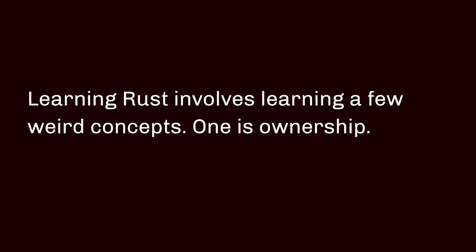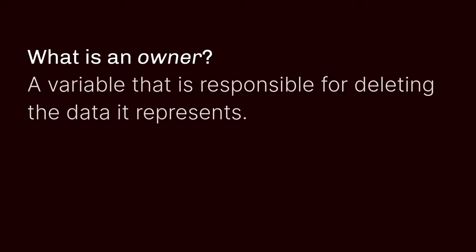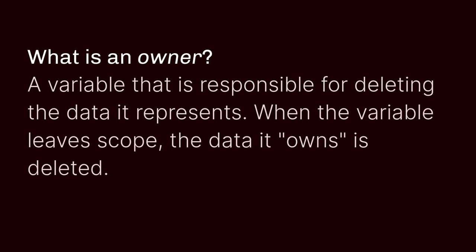Learning Rust involves learning a few weird concepts. One of them is this thing that people talk about as ownership. What is an owner? An owner is a variable that is responsible for deleting the data that it represents. When the variable ends its scope, any data that it owns is deleted. That is all the owner does.